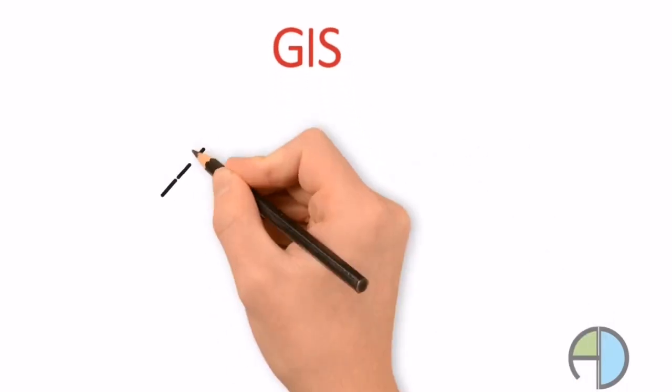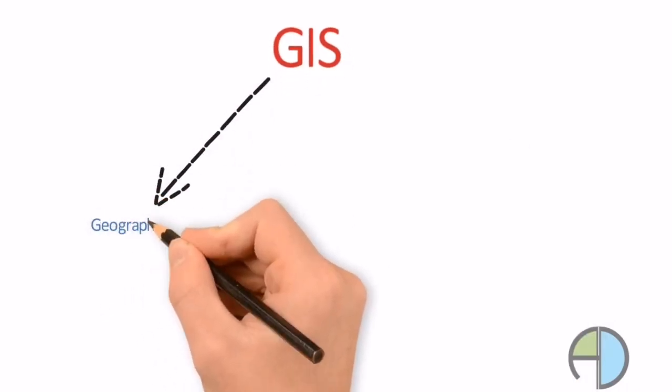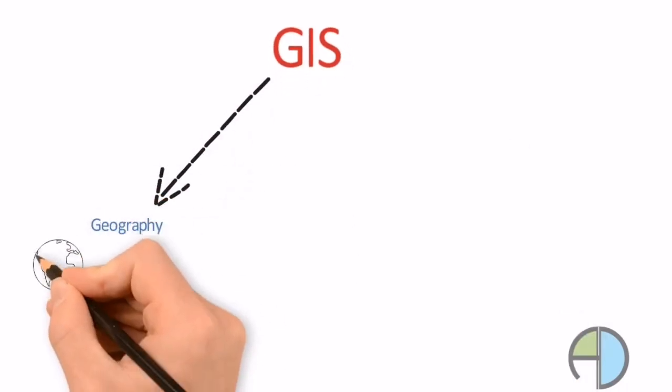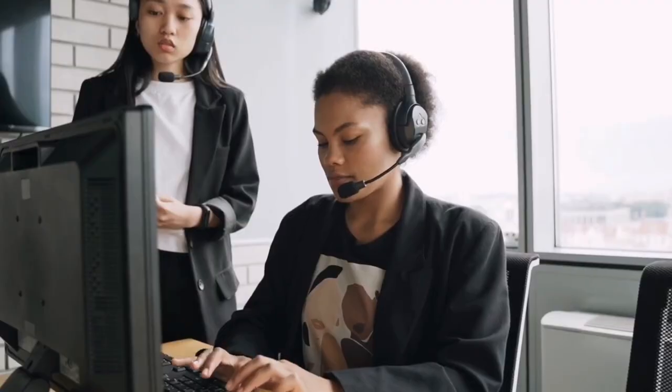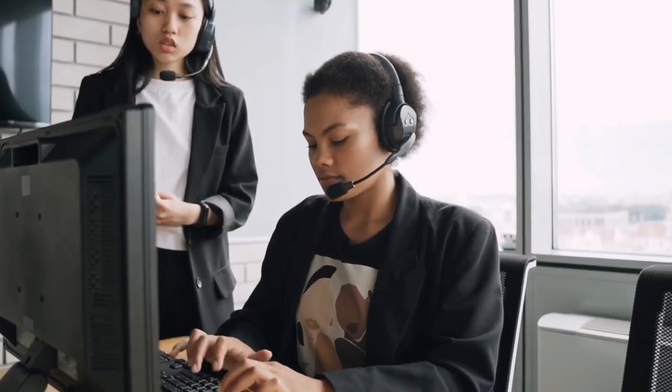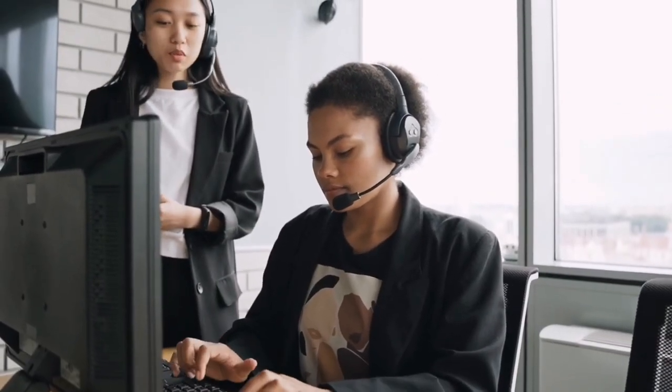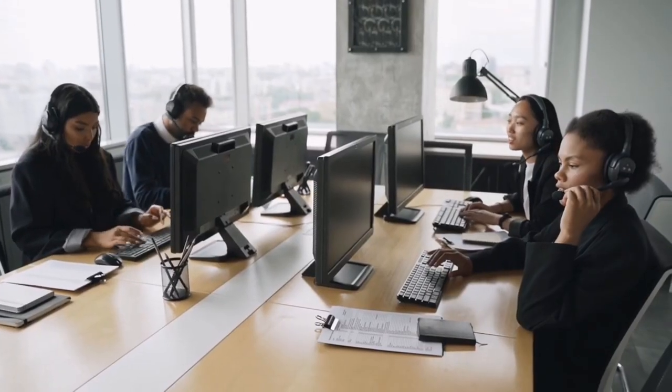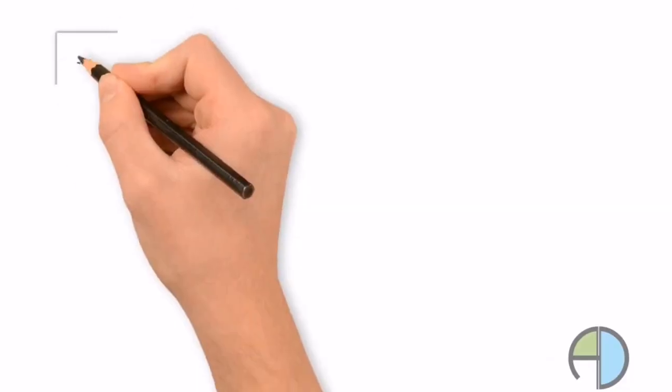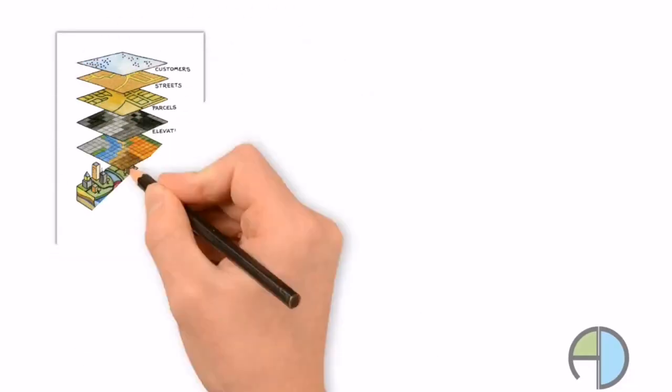Geographic Information System is a type of database containing geographic data combined with software tools for managing, analyzing, and visualizing those data.